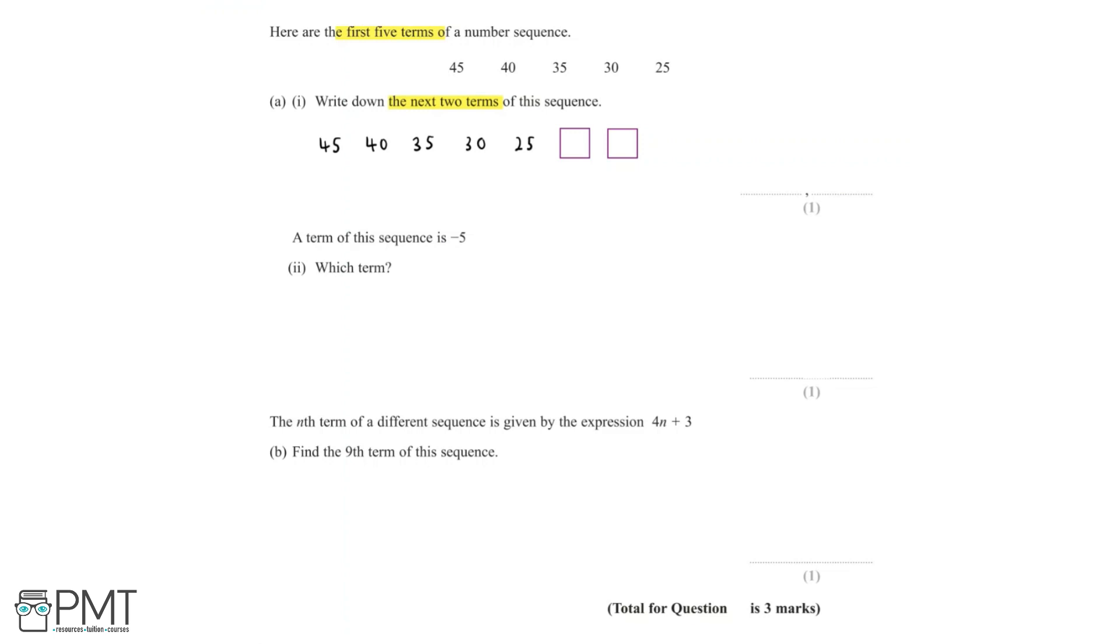And so we can see that to get to the next term in the sequence, we have to take away 5 from the term before it. Now to get the term after 25, we want to take away 5 again. And so 25 take away 5 would be equal to 20.